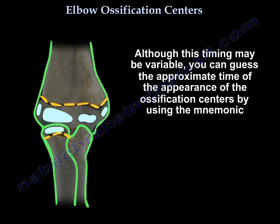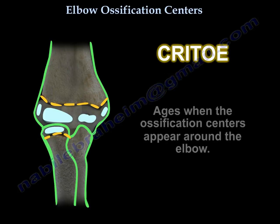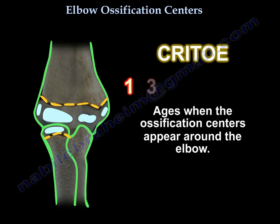Although this timing may be variable, you can guess the approximate time of appearance of the ossification center by using the mnemonic CRITOE. CRITOE will help you remember the order of appearance of the different elbow ossification centers.